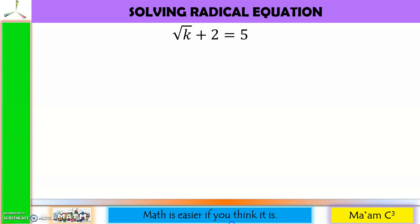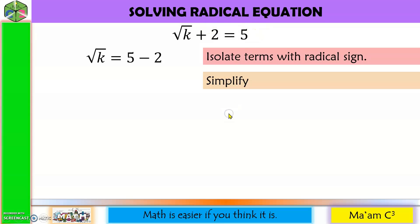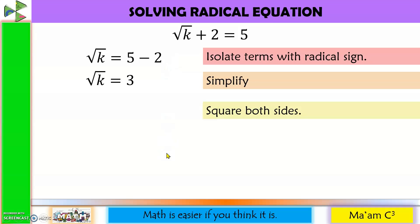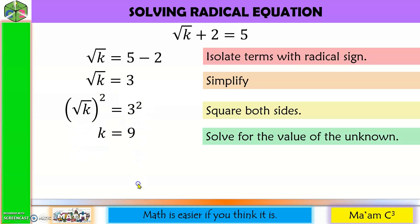Let us solve a radical equation. Square root of k plus 2 is equal to 5. First step: isolate terms with the radical sign — move 2 to the other side. Simplify: 5 minus 2 equals 3. Third step: square both sides, because this is a square root. The index 2 and exponent 2 cancel out, leaving k. And 3 squared equals 9.